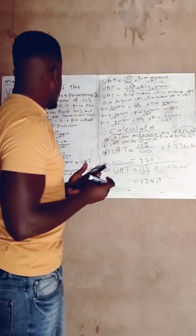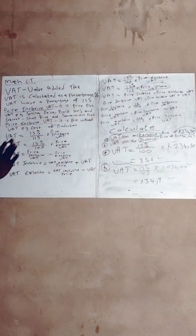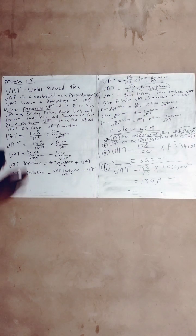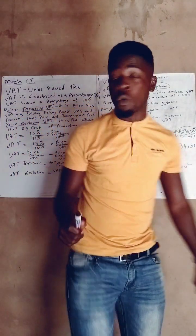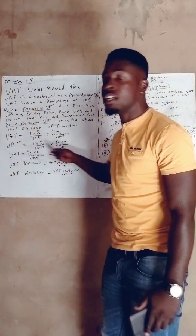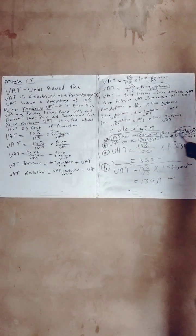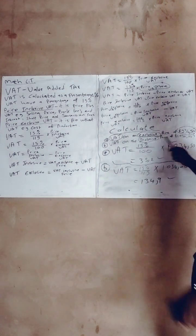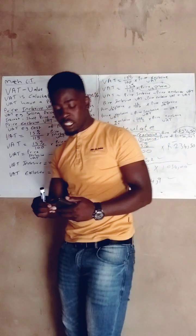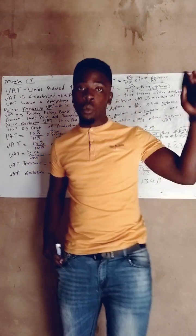From today, I'm sure you won't have any challenge when it comes to VAT. I suggest you write everything in your notebook. When you enter the exam room, write these formulas at the back of your question paper so that whenever you find a VAT question, you can check: are they asking for exclusive VAT — use this formula; or inclusive VAT — use that formula. Don't forget to like, subscribe, and share so you can get more content to help you pass your final examination with distinctions.